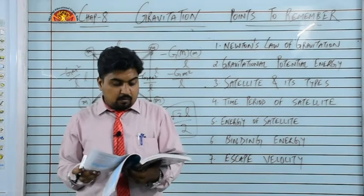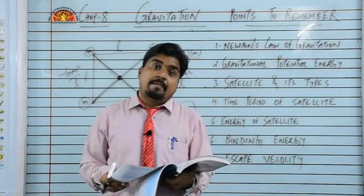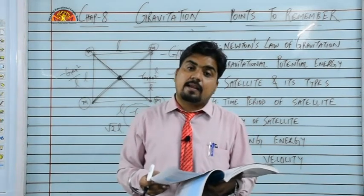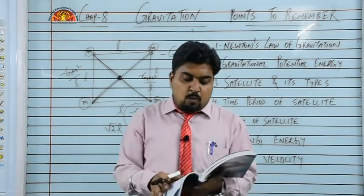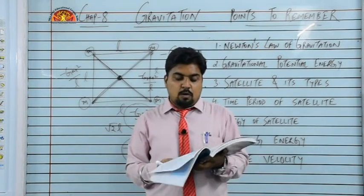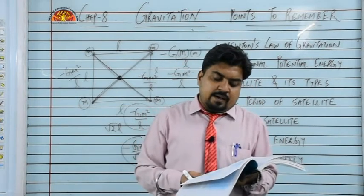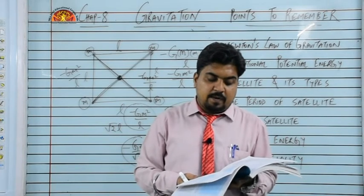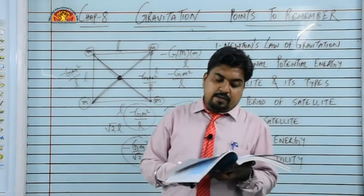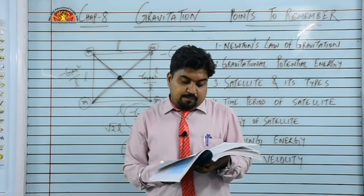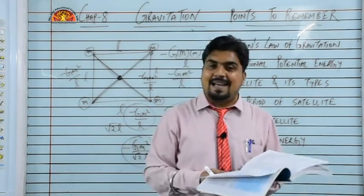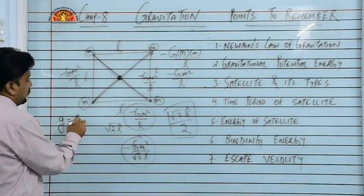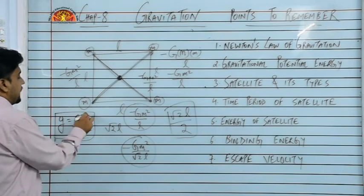Now we need to discuss about the time period numerical. In this there are some numericals, I have told you before, related to time period. There are formulas which you need to remember. Open page number 195. On page 195, see example 8.6. Look, it is talking about weighing the earth. Now weighing the earth means what? Read: you are given the following data - acceleration due to gravity is given, radius of earth is given, distance to the moon is also given, and time period of moon's revolution is also given. We need to obtain the mass of the earth.